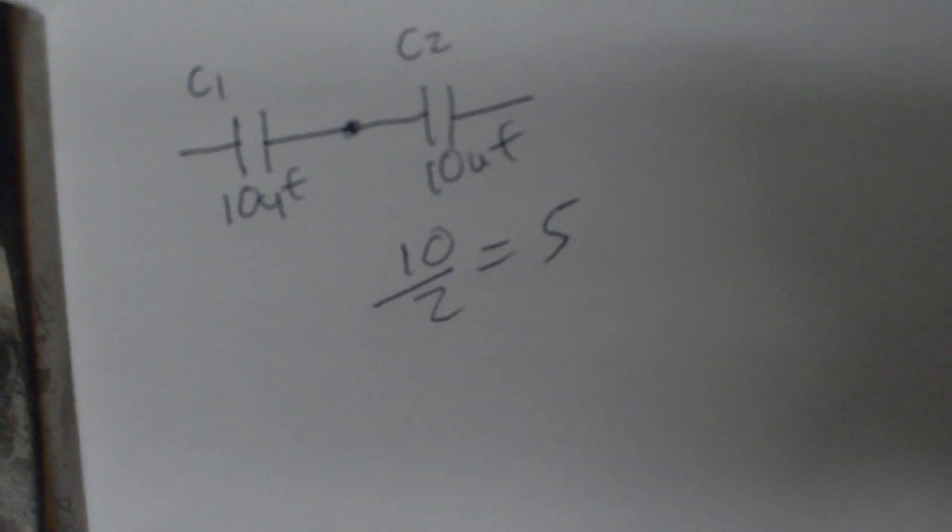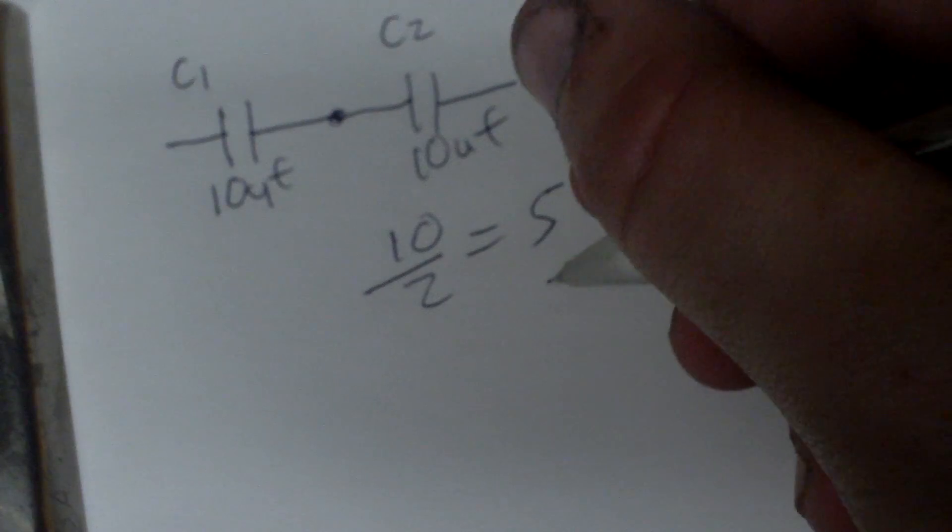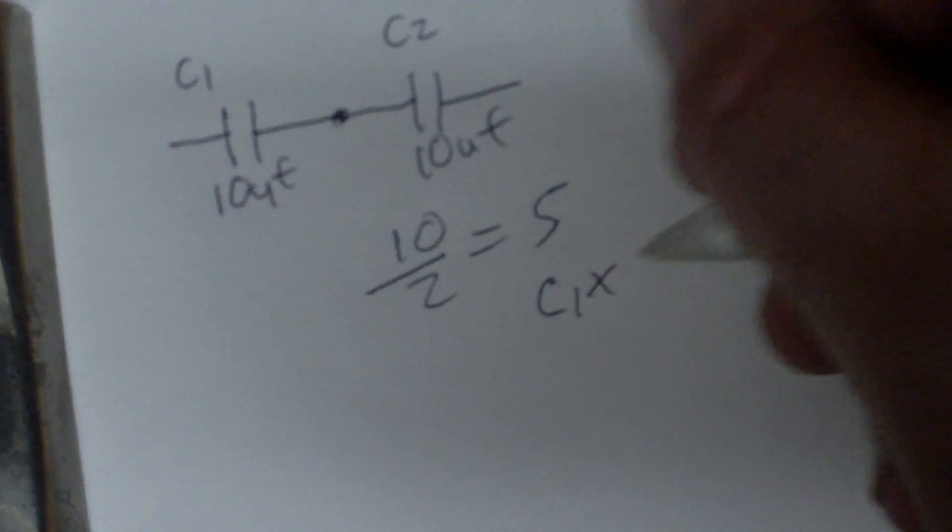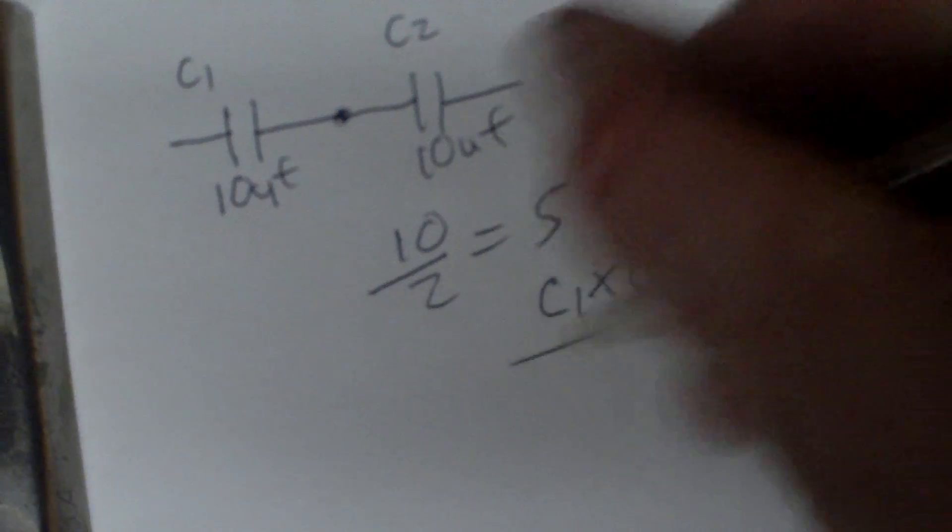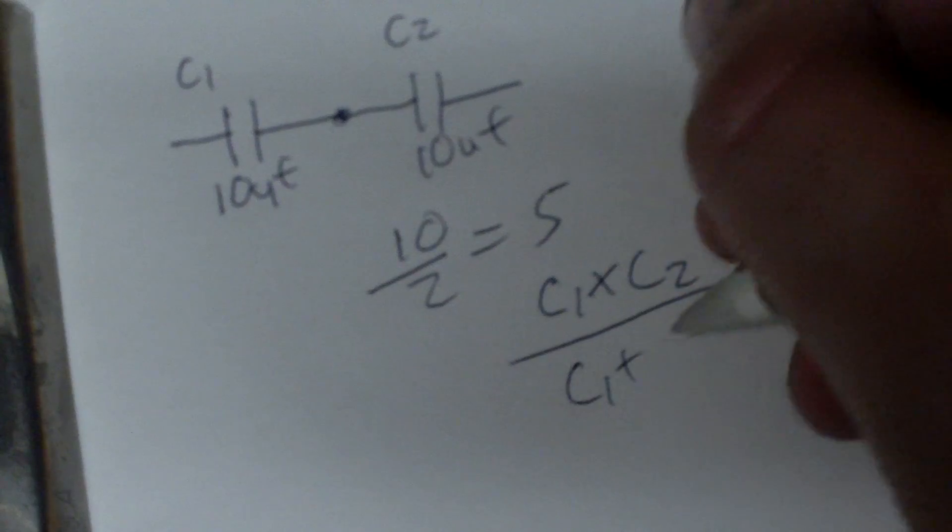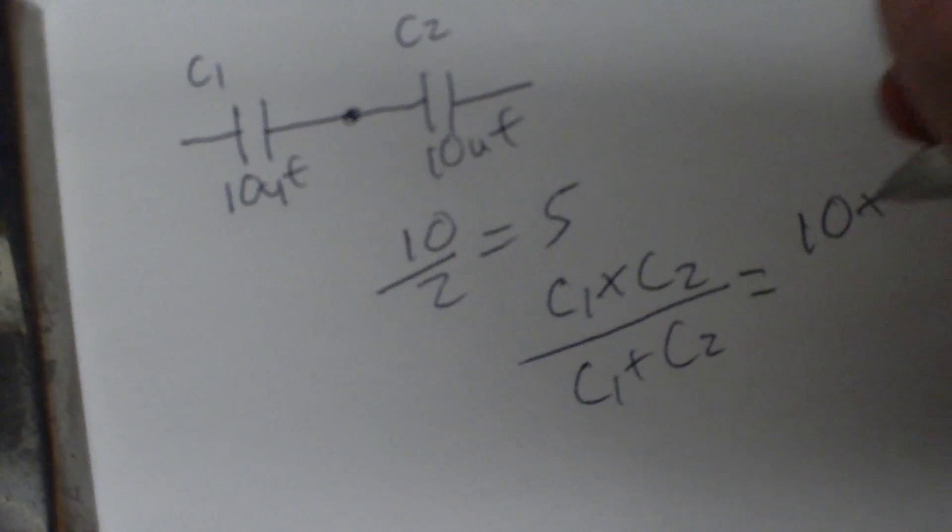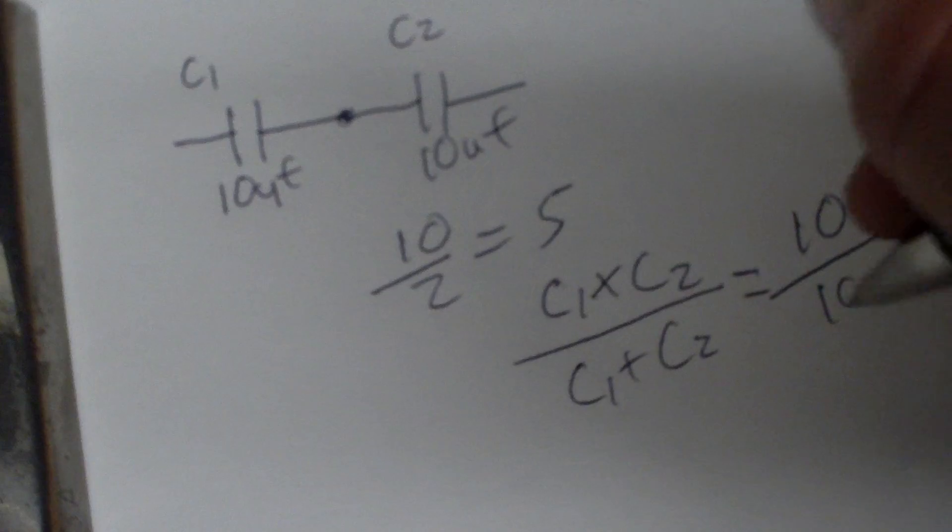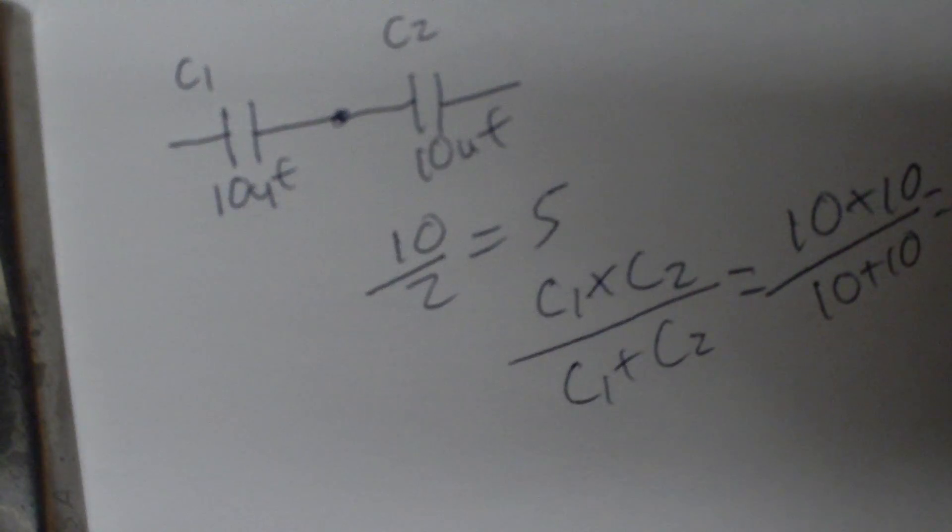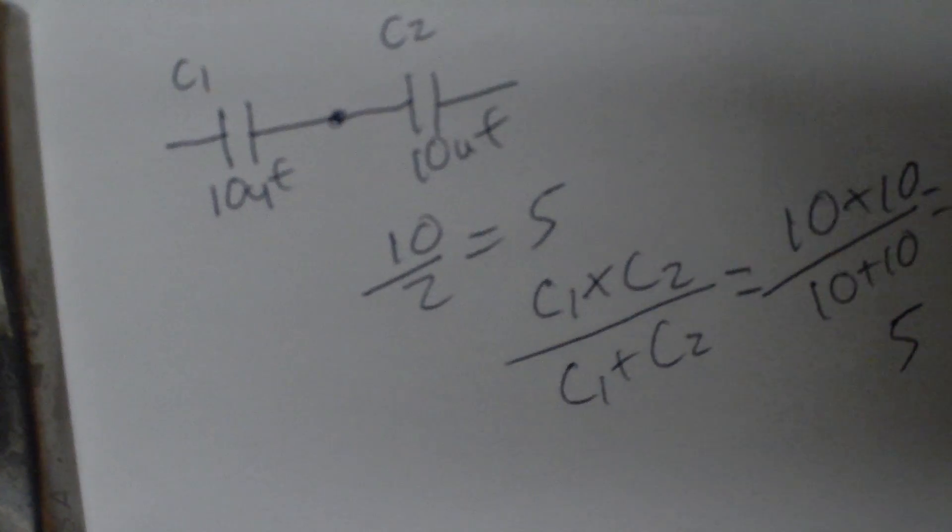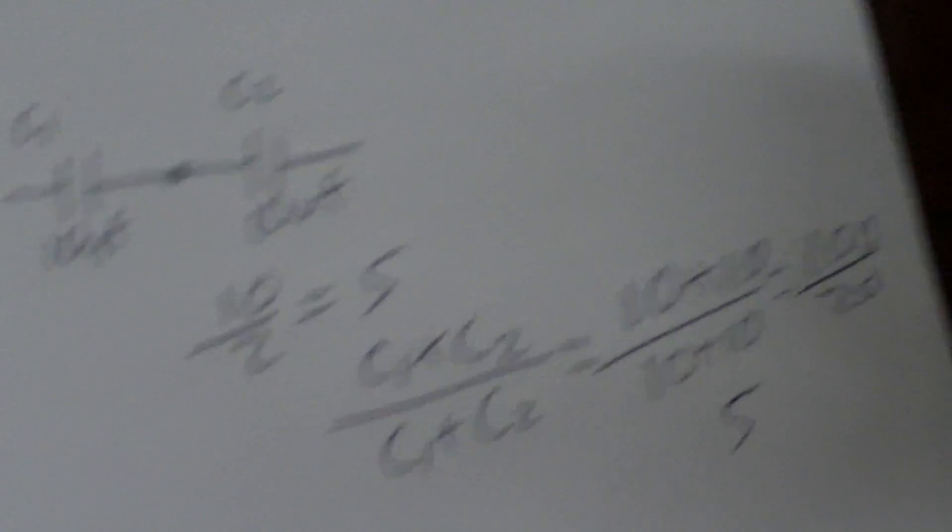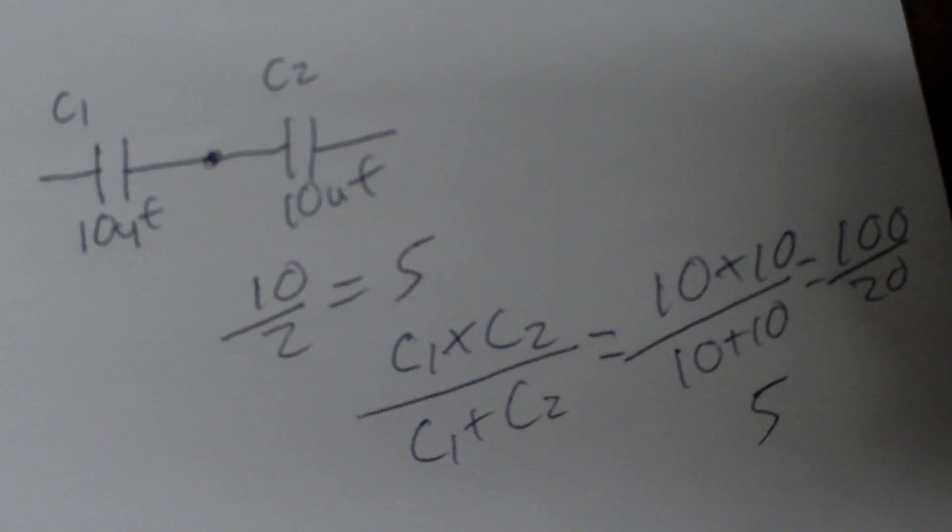But what you'll do, I think it still works with capacitors, C1 times C2 over C1 plus C2, which would be 10 times 10, 10 plus 10 equals 100 divided by 20, which still comes out to 5. Can't see it, can you? Okay, that's how you do this setup here is only for two capacitors in series.